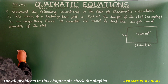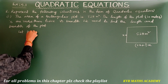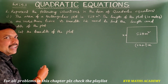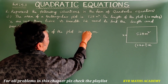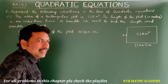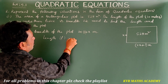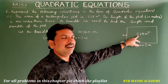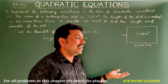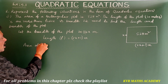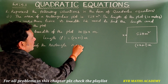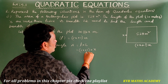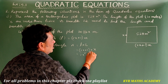Let the breadth of the rectangular plot be x meters. Then the length L = 2x + 1 meters. The area of the rectangle is given as 528 square meters. The formula for area is A = L × B, so (2x + 1) × x = 2x² + x.